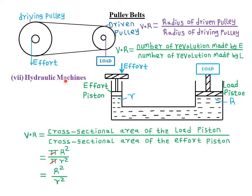So we have two formulas to calculate the velocity ratio for hydraulic machines. The first: take the cross-sectional area of the load piston divided by the cross-sectional area of the effort piston. The second: if you are given the radii of the two pistons, take the square of the radius of the load piston divided by the square of the radius of the effort piston. The formula you use depends on what is provided in the question.